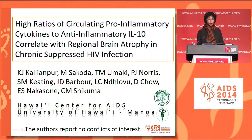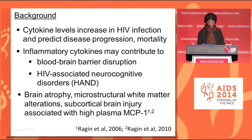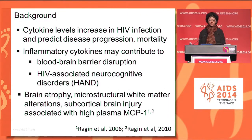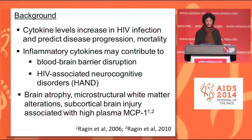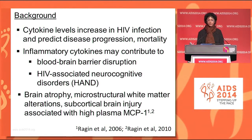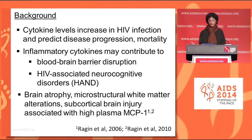My talk is on cytokines and regional brain volumes. First, a little background. It's well known that HIV causes increases in the cytokine levels of many pro-inflammatory cytokines as well as IL-10. Some of these increases predict disease progression and mortality. For example, TNF-alpha is associated with progression to HIV dementia and AIDS.